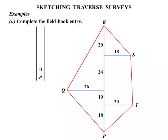Our second example, we need to complete the field book entry. We've already got our sketch, we're working backwards. That line there is our critical line, starting at point P.